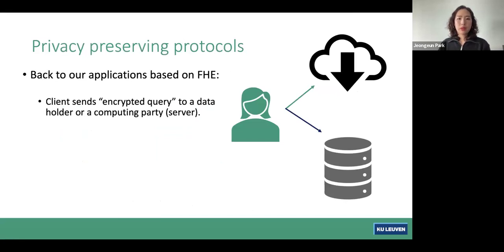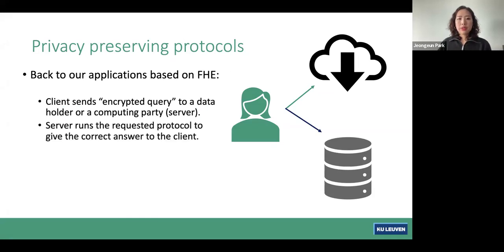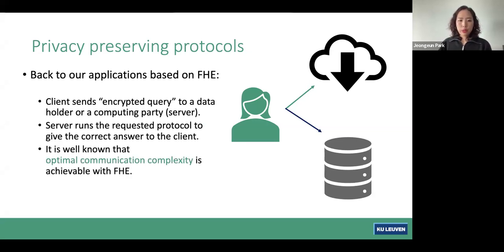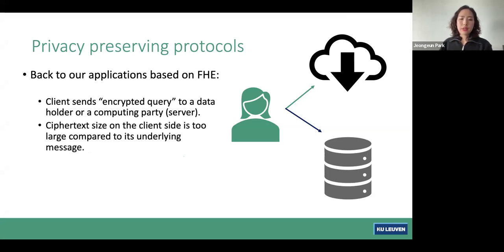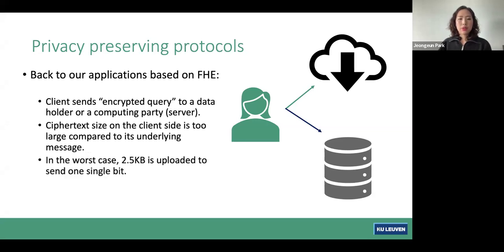Going back to FHE applications: the client sends an encrypted query to a server, which runs the requested protocol to give the correct answer. It's already known that optimal communication complexity is achievable with FHE. However, the actual communication cost is different — the ciphertext on the client side is too large compared to its underlying message to handle the noise. In the worst case, 2.5 kilobytes can be uploaded to send a single bit, which is too slow.